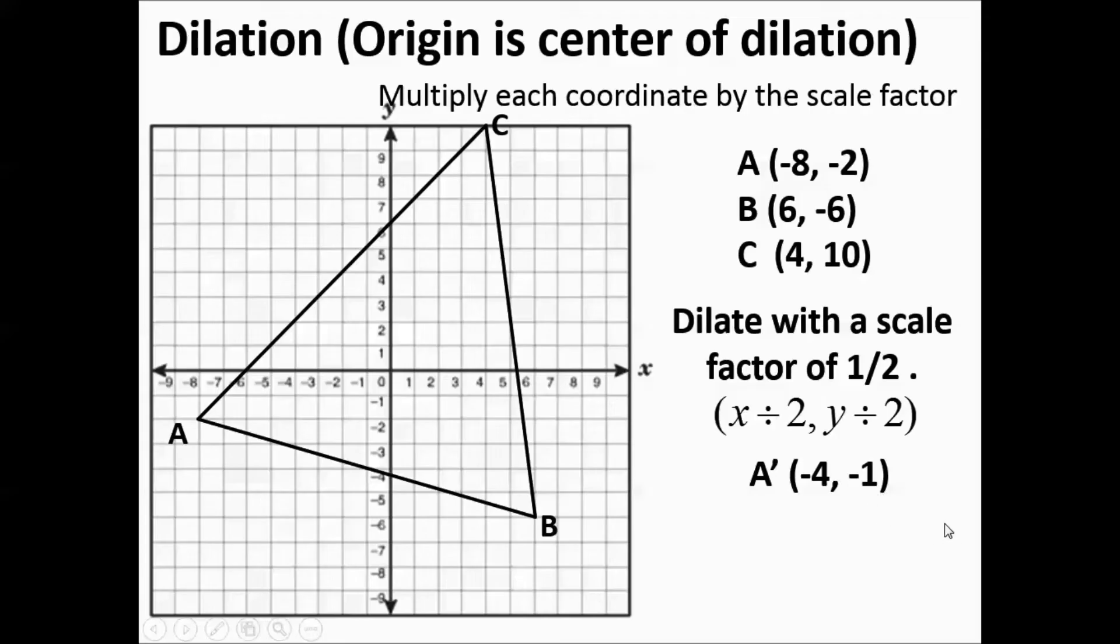Do the same thing to B. Divide them both by 2. You're going to have 3 negative 3. 4 negative, or 4 10 is going to become 2 5. So when you plot those points and connect, you get a smaller triangle inside and you label the new image points.